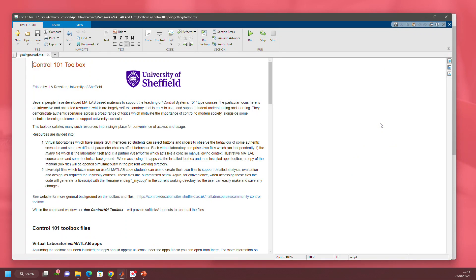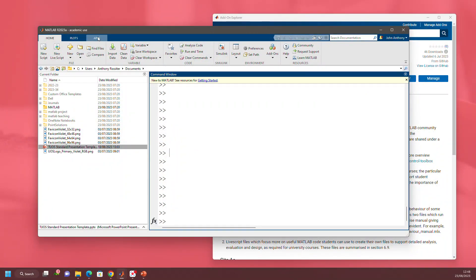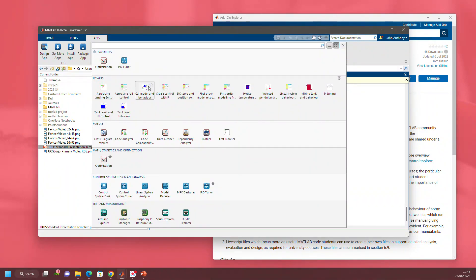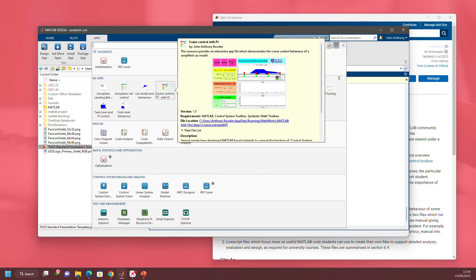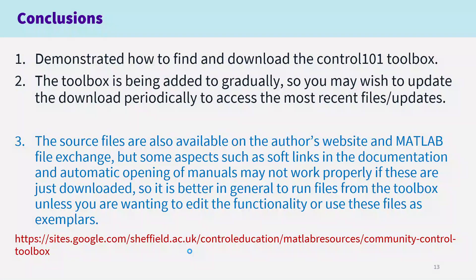Press Close and now you can see it's opening the getting_started.mlx. If I go to the Apps tab and scroll down, you can see lots of the virtual labs have been downloaded. In conclusion: we've demonstrated how to find and download the Control 101 Toolbox. The Toolbox is being added to gradually, so you may wish to update the download periodically. The source files are also available on the author's website, but I would always recommend downloading the Toolbox properly — things will work better that way.